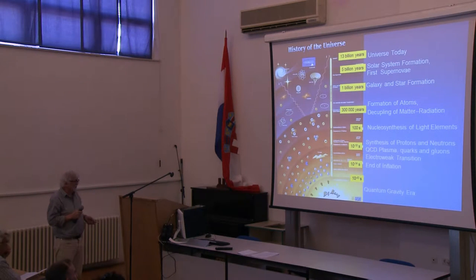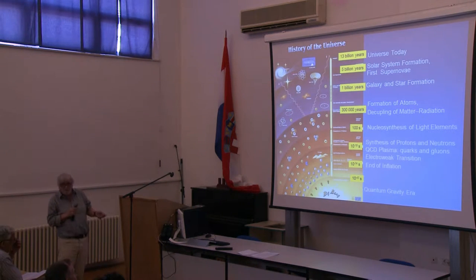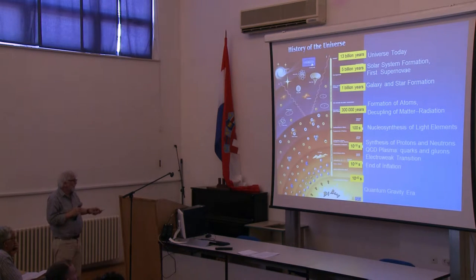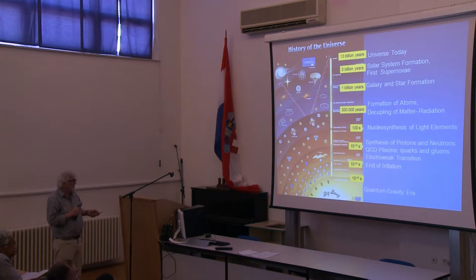I will come back to inflation a little later. Up to this point, the universe was basically homogeneous. Then we begin with the electroweak transition, where the elementary constituents of matter were formed — like electrons, neutrinos, and quarks. After that, there is an era of synthesis of protons and neutrons. It's still a very short period — 10 to the minus seconds. Then, in about 100 seconds, we have nucleosynthesis of light elements. From then on, we have a formation of atoms up to about 300 thousand years.